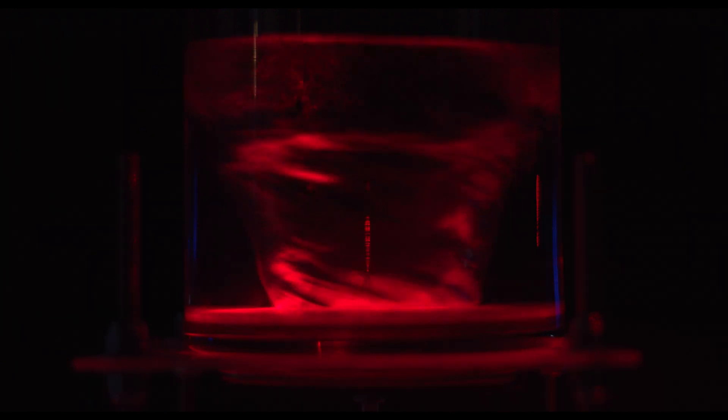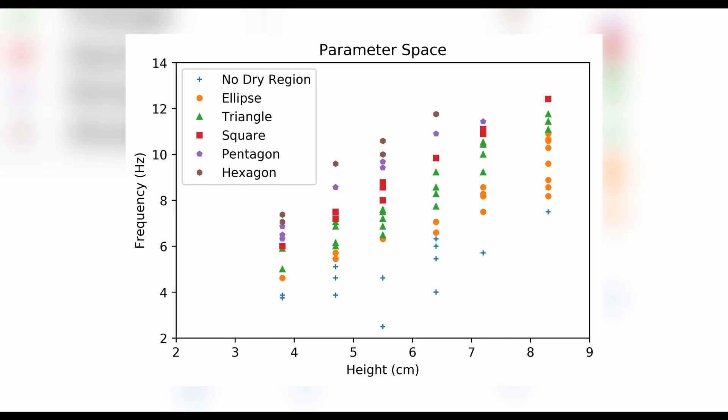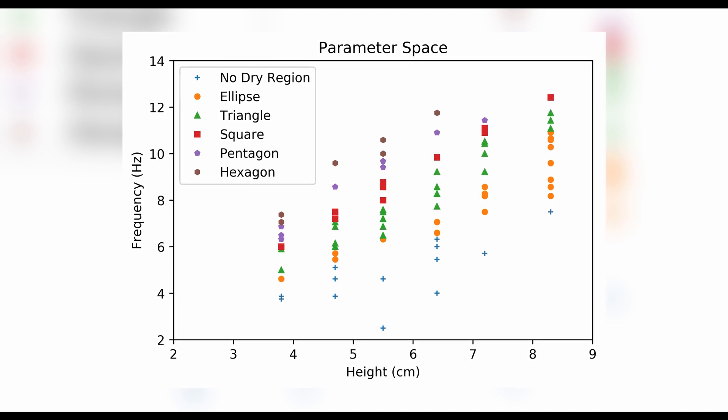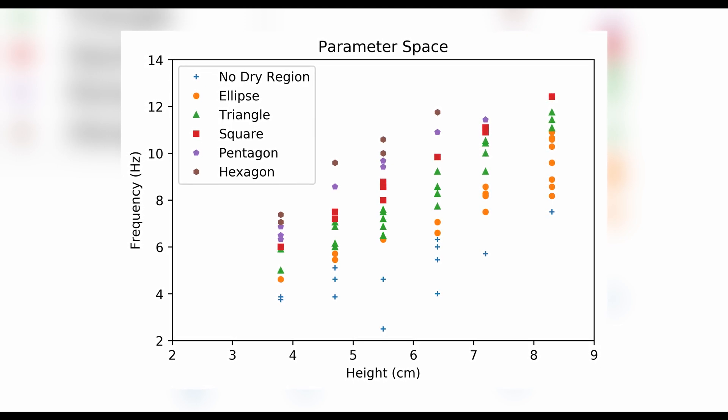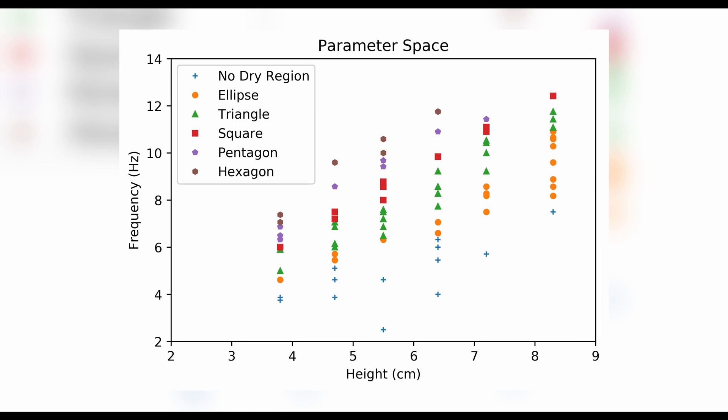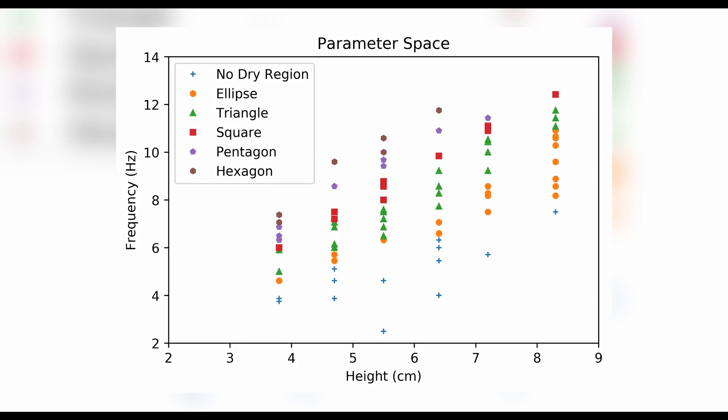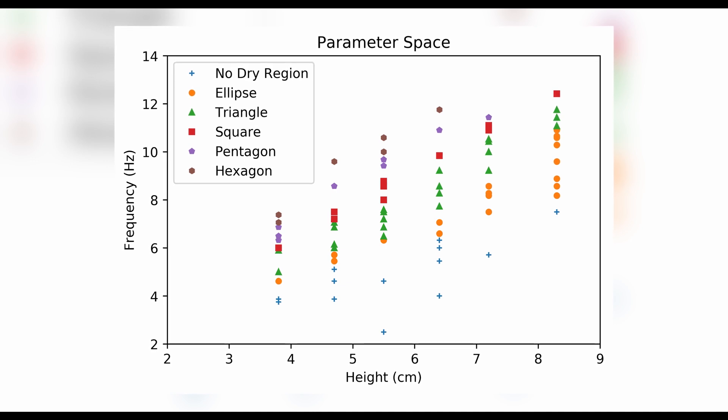To sketch out the boundaries of the transition, I filled the container to different levels and gradually increased the speed of the plate. This is the graph that I obtained. Here, the different markers represent different polygon shapes. The horizontal axis is the water height, and the vertical axis is the frequency of rotation.